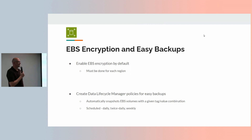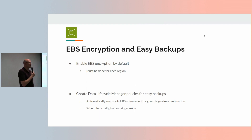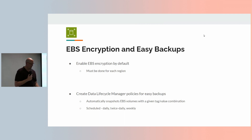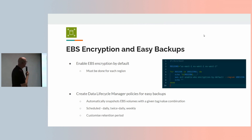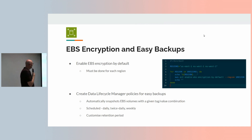EBS is basically the disks you connect to EC2 instances — virtual disks, the storage for your EC2 instances and your RDS database instances. Not S3, which is object storage — this is block storage, so disks. There's a bash script for enabling encryption by default in three regions: US East 1 (Virginia), EU West 1 (Ireland), and EU West 2 (London). You just run a CLI command for each region and job done. For some reason you can't do this in the console — please AWS fix this.